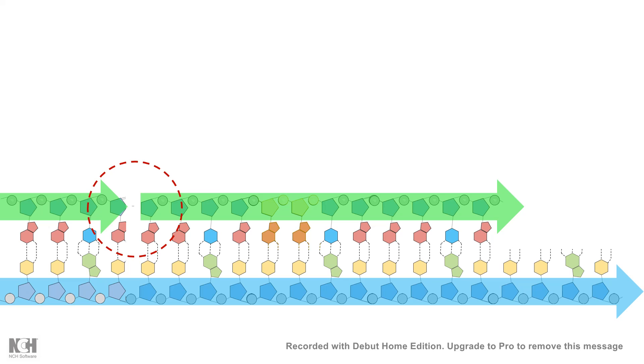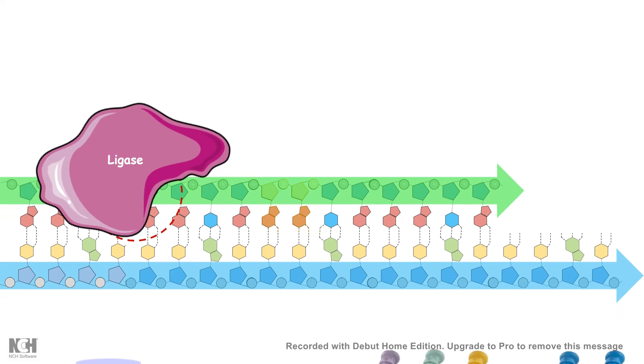You have an open 3' hydroxyl terminus at one side which needs to get sealed by forming a phosphodiester bond, which is performed by DNA ligase.